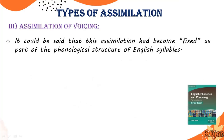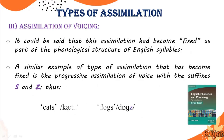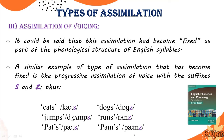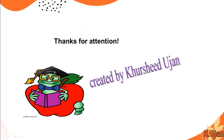Here is another example of assimilation of voicing that has become fixed: consider 'cats', 'dogs', 'jumps', 'runs', and 'pets' and 'palms'. These demonstrate progressive assimilation of voicing with suffixes. Thanks for your attention — hopefully this was very helpful for all of you.